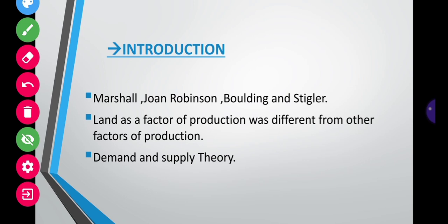This theory was given by Professor Alfred Marshall, Joan Robinson, Boulding, Stigler, and many other economists who have contributed to it. That is the reason we cannot call this theory by any one economist's name — we call it the Modern Theory of Rent.